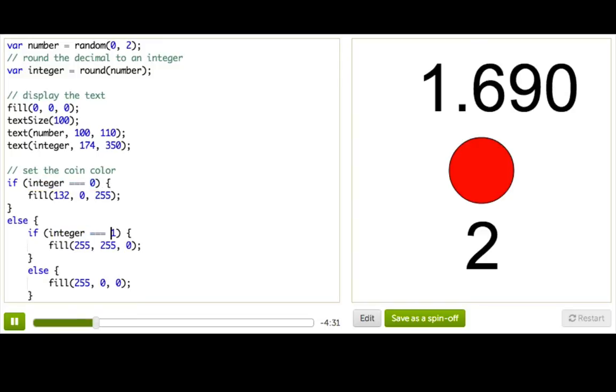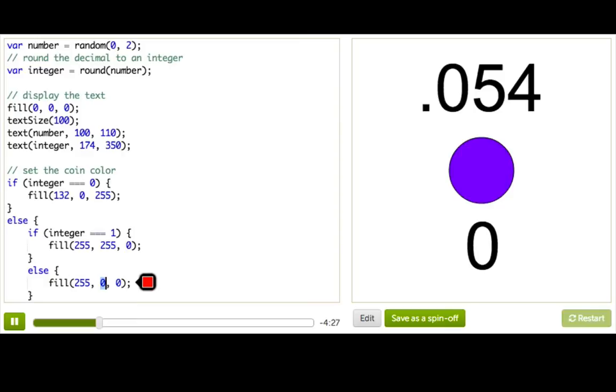Otherwise, that is, it wasn't 0, it wasn't 1, so it must be 2. We're going to make the color red. If I press restart a bunch of times, it works! Woohoo!